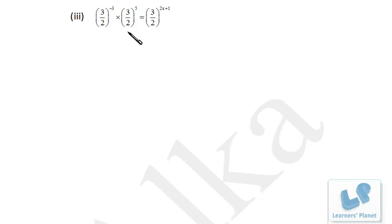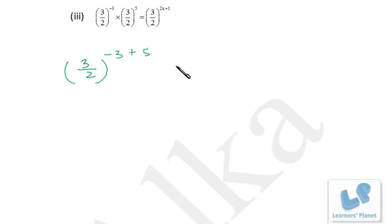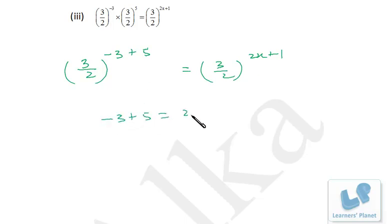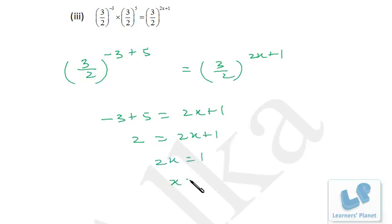Similarly we have this problem where on the left hand side and right hand side the base 3/2 is the same. So it's minus 3 plus 5, equal to 3/2 raised to 2x plus 1. Now if base is same, power will be same. So minus 3 plus 5 equals 2x plus 1. Now minus 3 plus 5 is 2, so 2 equals 2x plus 1, meaning 2x equals 1, so x equals 1/2.